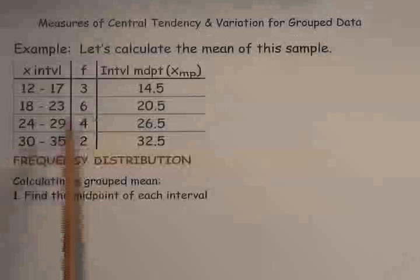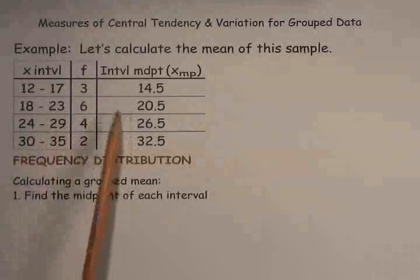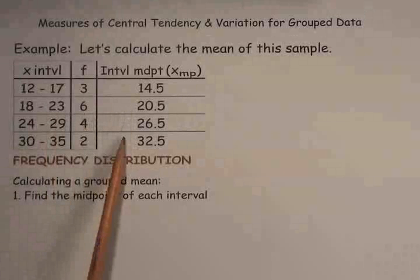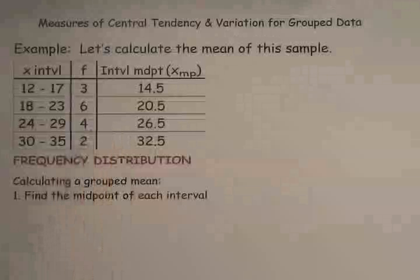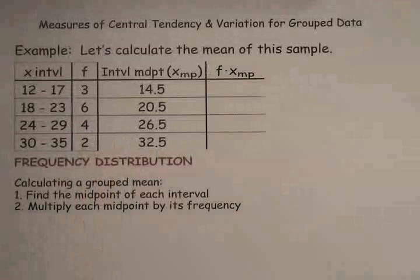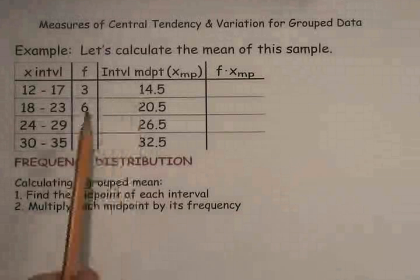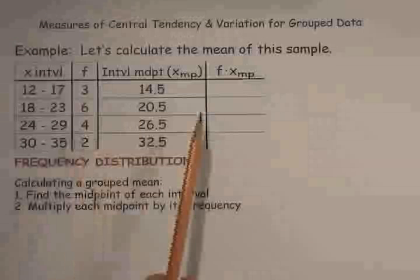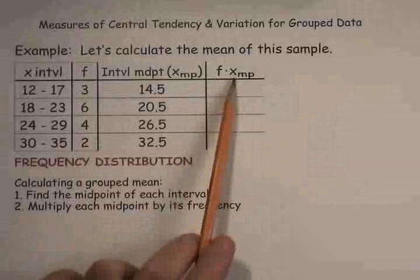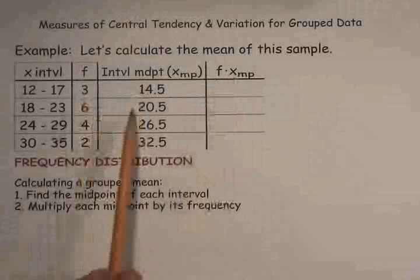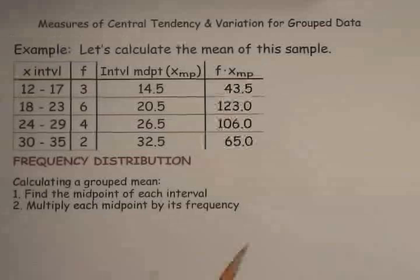If you take 18 and 23 add them together, divide by 2, you get 20.5. So you assume you have six 20.5s. And you continue that process for 26.5s and two 32.5s. Now you have to take into account that there's not just one of these. There are three of these. There's not just one of these. There's six of these and so on down the line. So you take each frequency and multiply it by the midpoint of the interval that you just found. In other words, 3 times 14.5, 6 times 20.5, all the way down the line.